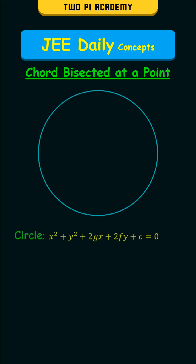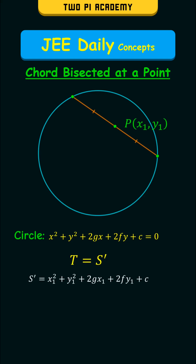Consider a circle given by the following equation and a point P(x1, y1) inside it. Consider a chord of this circle such that the given point is the midpoint of that chord. Its equation will be given by T = S', where S' is the value you get by substituting the coordinates of the point into the equation of the circle.